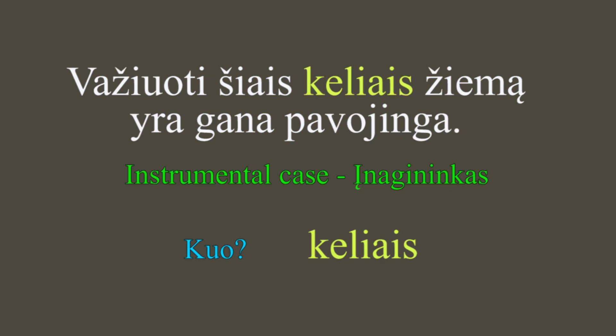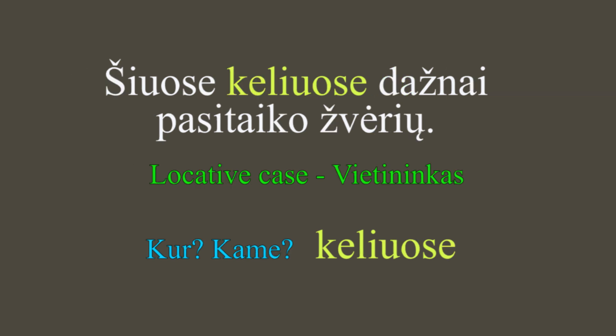Įnagininkas (instrumental, kuo): Važiuoti šiais keliais žiemą yra gana pavojinga — driving on these roads in winter is quite dangerous. To use these roads is quite dangerous. Kuo? Keliais — instrumental case. Vietininkas (locative, kur/kame): Šiuose keliuose dažnai pasitaiko žvėrių — on these roads you can often meet animals. Šiuose keliuose — in these roads.